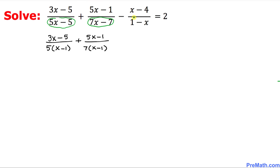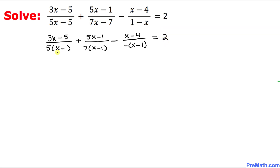Now let's look at the third fraction's denominator: 1 minus x. We can write x minus 4 on the top, and for 1 minus x, if I factor out a negative sign, this can be written as negative (x minus 1). This equals 2 on the right-hand side.